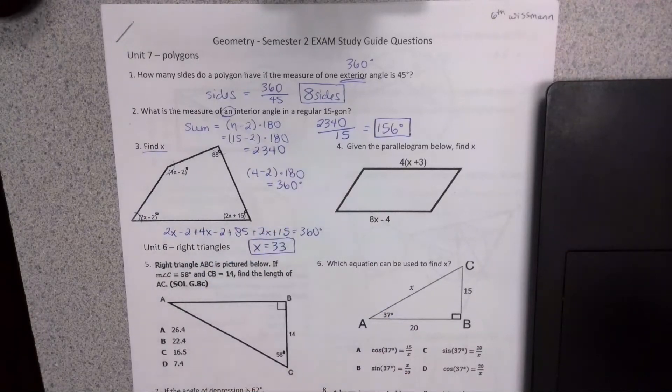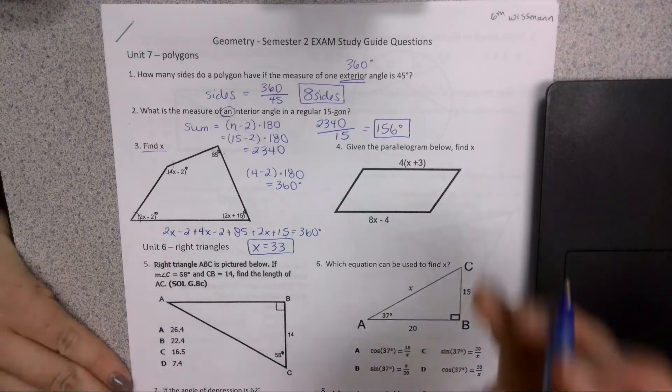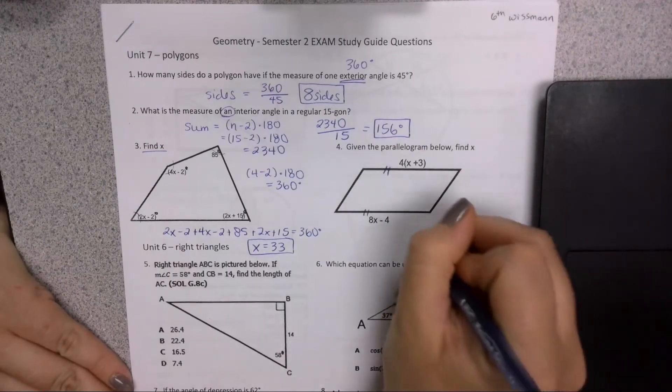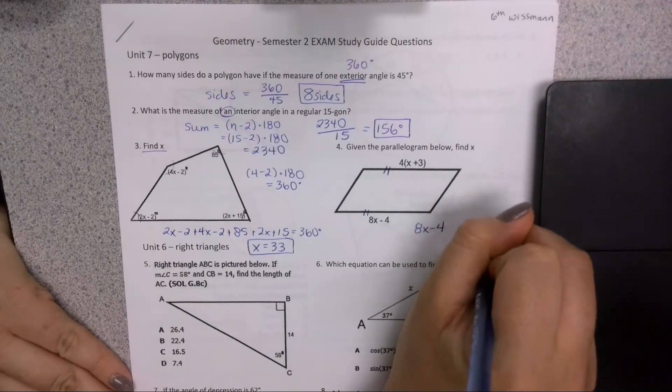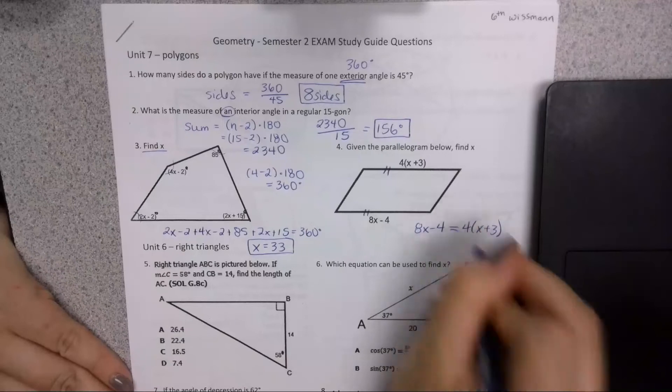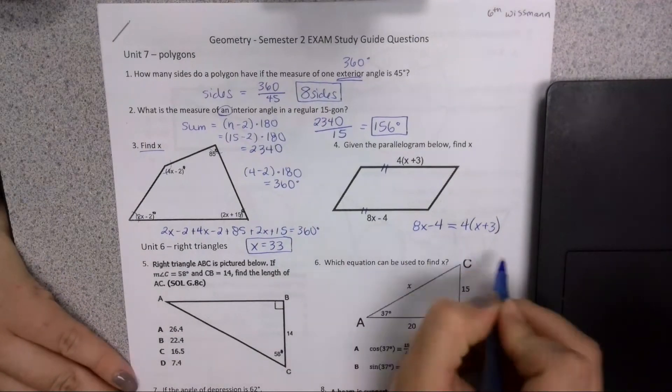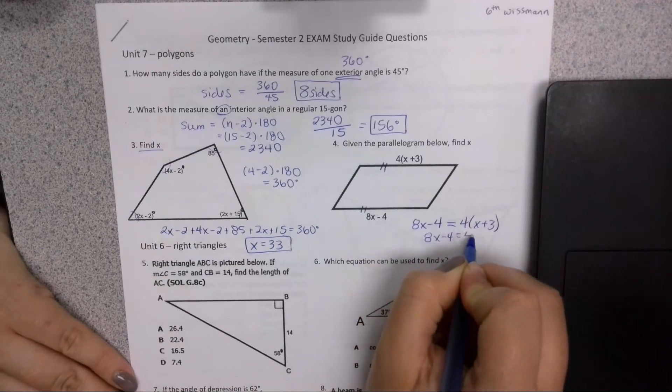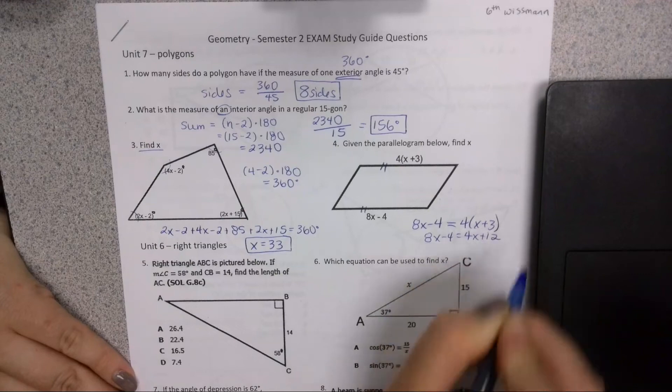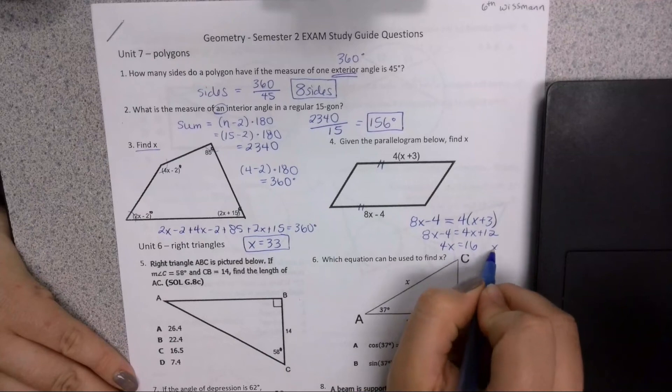The other thing we need to remember from Unit 7 is that specific quadrilaterals have properties. Parallelograms in particular, the opposite sides are congruent. So 8x and 4 quantity x plus 3 have the same measure. We can throw this straight into Desmos, or if we want to, we can solve it ourselves. So x is going to equal 4.